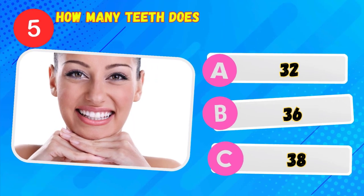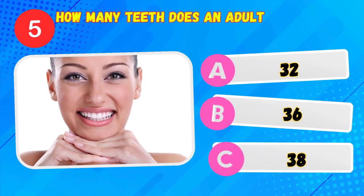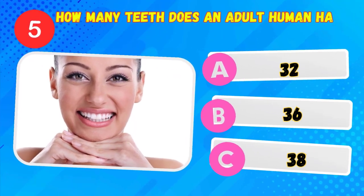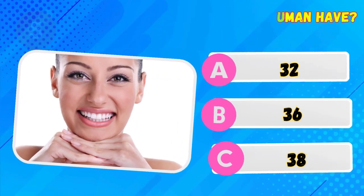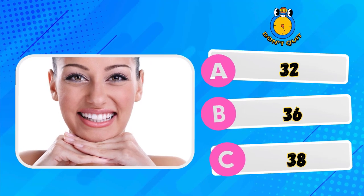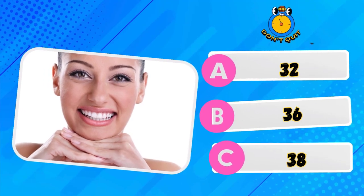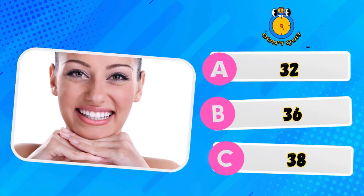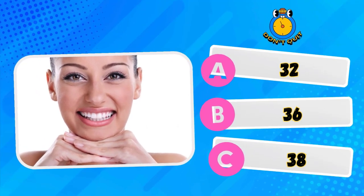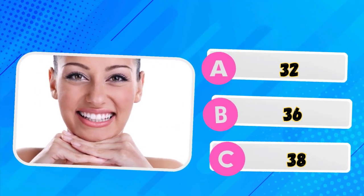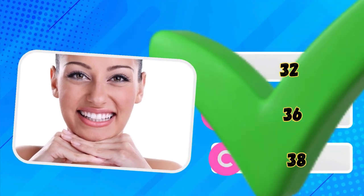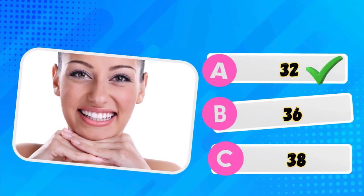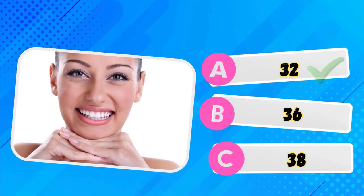How many teeth does an adult human have? 32, 36, or 38? Yes, 32 is correct!